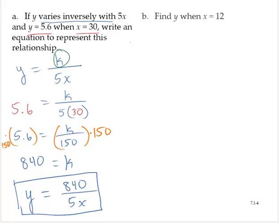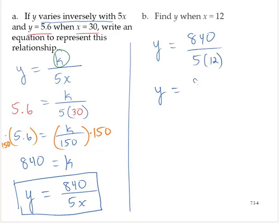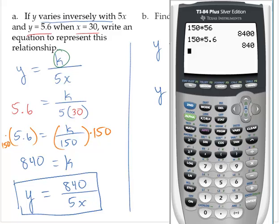Part b, find y when x equals 12. Well, then y would equal 840 over 5 times 12. So y would equal 840 over 60, which is 14.